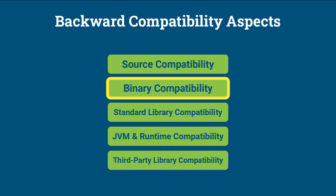Binary compatibility. Java 11 maintains binary compatibility with Java 8, allowing Java 8 compiled bytecode — that is, the class files — to be executed on a Java 11 runtime without recompilation. If you have a Java 8 compiled JAR file containing classes compiled from source code like the example above, you can run it on a Java 11 runtime without recompiling the JAR file.